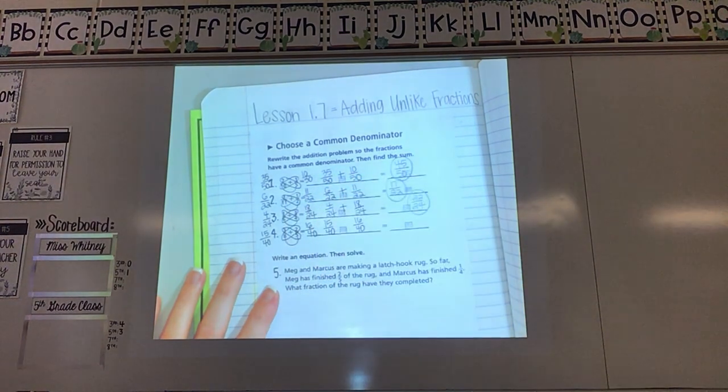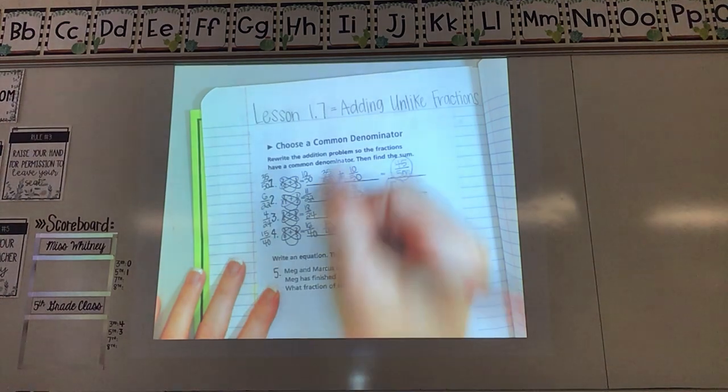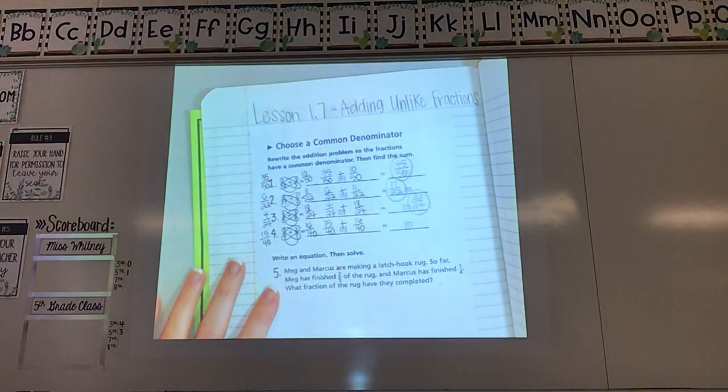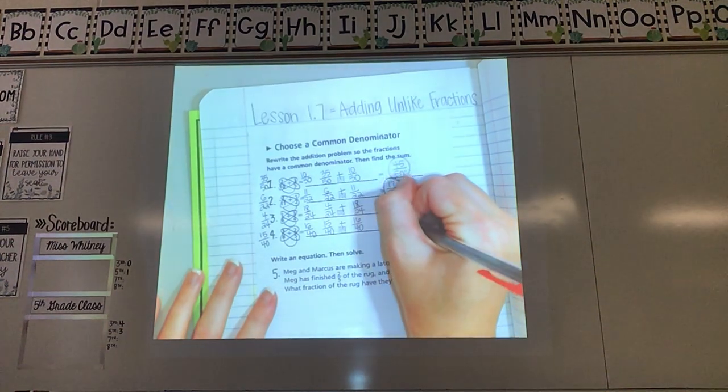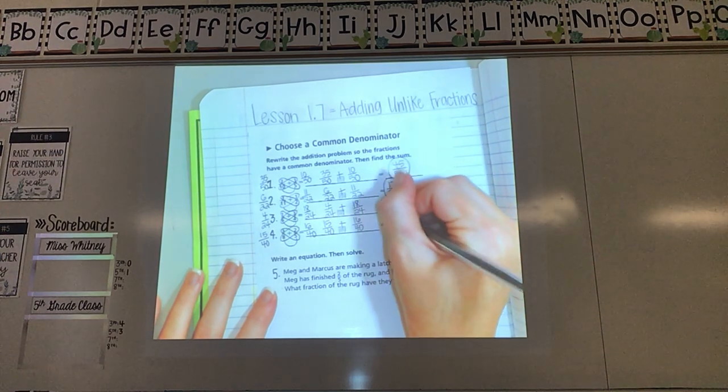What are they asking me to do with those two fractions? Add them together. Adding across the top. Be careful on this one. You should get 31. Bottom number stays the same. 31 fortieths.